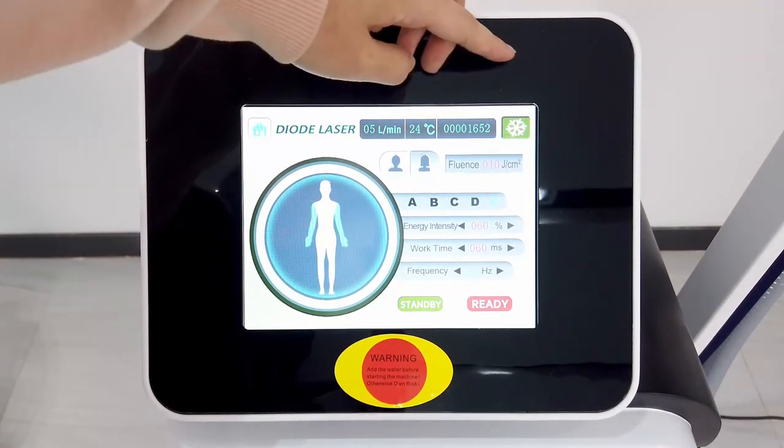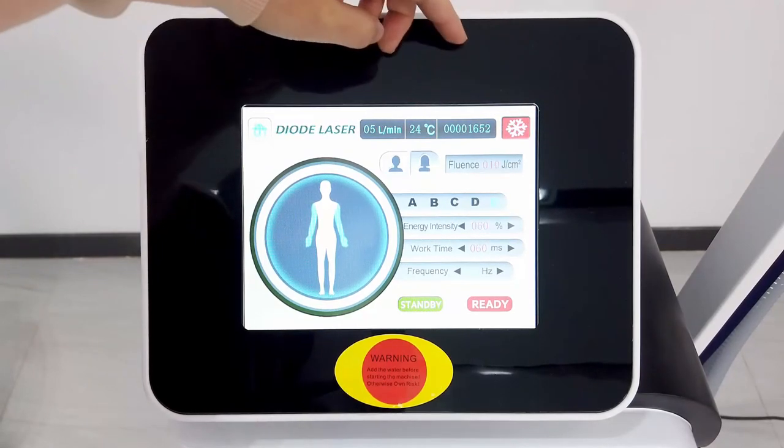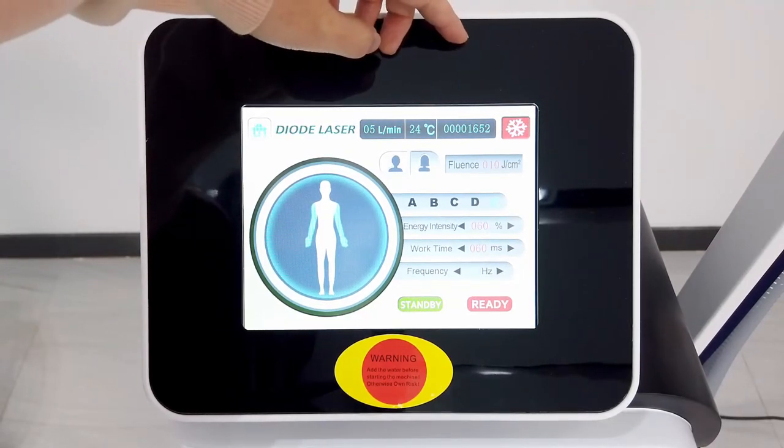When we turn on the cooling system, the handle will be in the cooling state. When you turn it off, it will be at normal temperature.